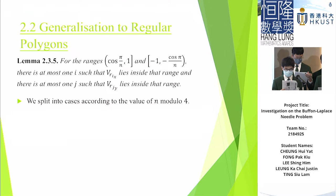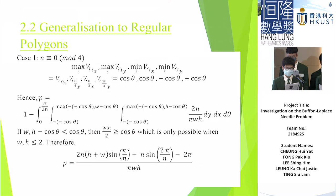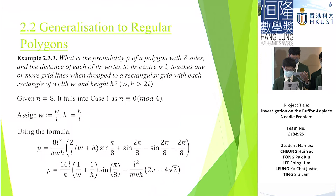So, this is case 1, n congruent to 0 mod 4. And by some calculation, we can obtain this result. And here is Example 2.3.3, where n equals 8. And after some calculation, we obtain this result, which we will get back to later.